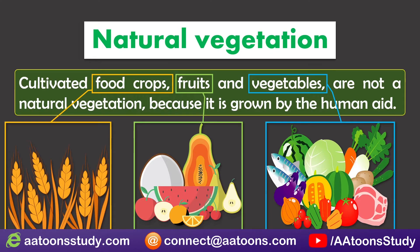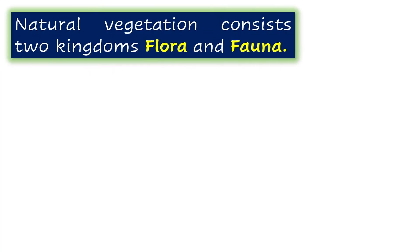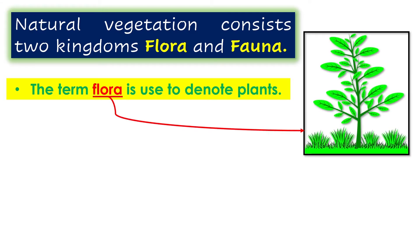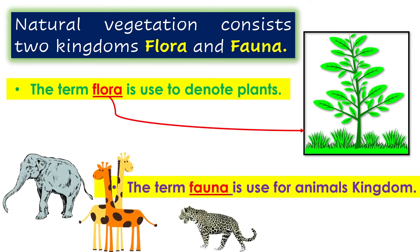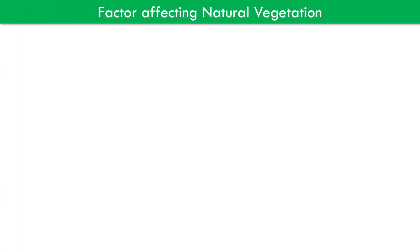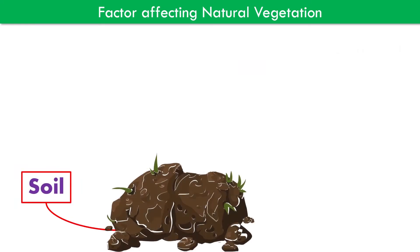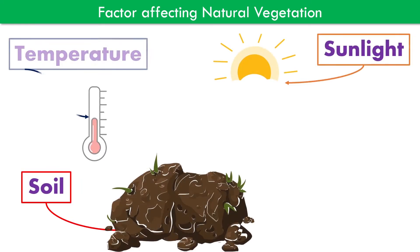Natural vegetation consists of two kingdoms: flora and fauna. The term flora is used to denote plants, while the term fauna is used for the animal kingdom.